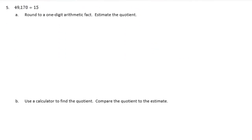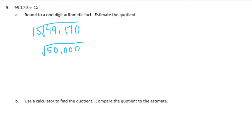Number 5: round to a one-digit arithmetic fact and estimate the quotient for 49,170 divided by 15. 49,000 is really close to 50,000, so I'll make that 50,000. For 15, rounding to 20 makes 5 divided by 2, which isn't easy, so I'll make it 10 instead. Canceling two zeros gives 5 divided by 1, equal to 5, with three zeros — so the estimate is 5,000. This one might be a little more off, and that's okay.